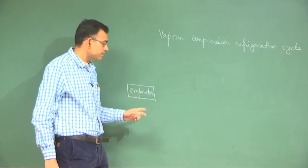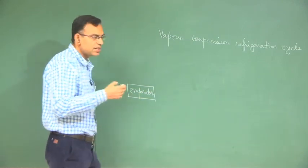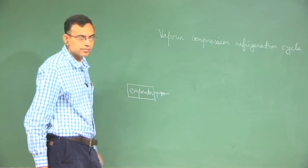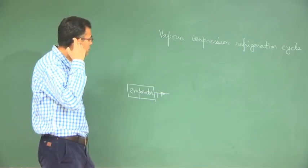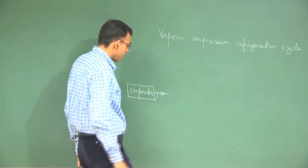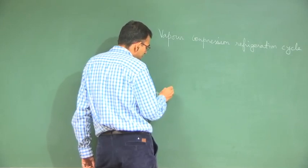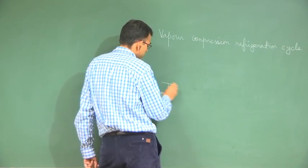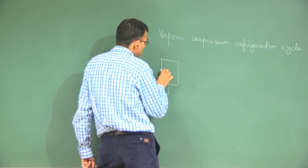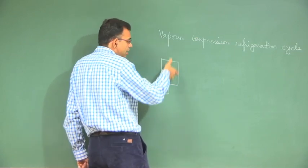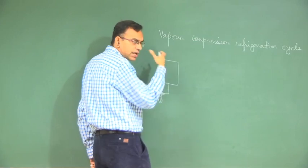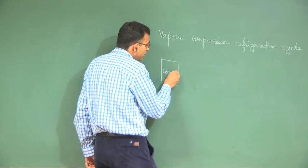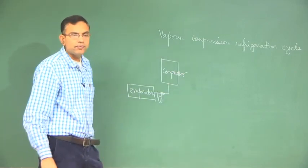In the evaporator, the working fluid evaporates — that is, it gets transformed to saturated vapor. That happens at state 1. At the exit state of the evaporator, whatever vapor comes out is compressed in a compressor. Whether it is a reciprocating compressor or a rotary compressor, we will just call this a compressor without considering what type it is.